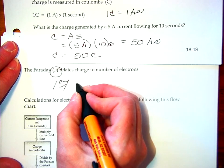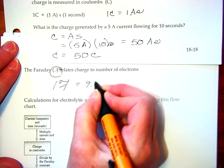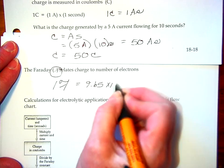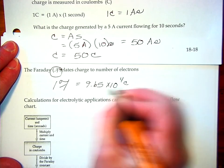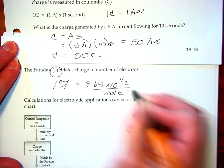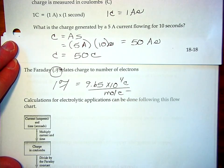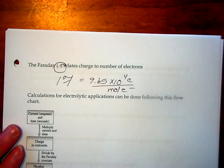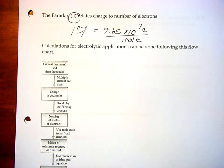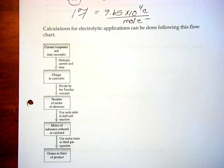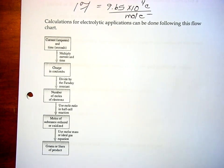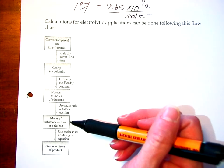So, one Faraday is equal to 9.65 times 10 to the fourth coulombs per mole of electrons. Now, the Faraday constant is a two-part unit, so we can use it as a conversion factor in our calculations. And, these calculations are going to follow this route of this little flow chart that I pulled out of your book.